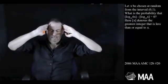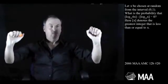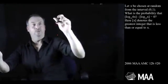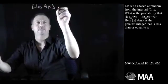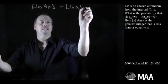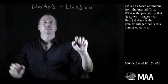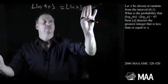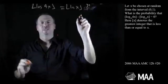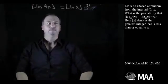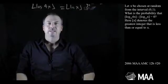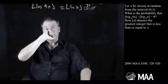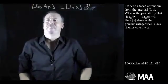Alright, so we're looking for: choose a number x between 0 and 1, and ask what's the probability that if I round down log base 10 of 4x, can I just write log of x, minus log of x equals 0? Well, the floors will be equal to each other. I want to know what's the chances if I choose something between 0 and 1 that this is true. Round down log of 4x, round down log of x, and you get the same integer.